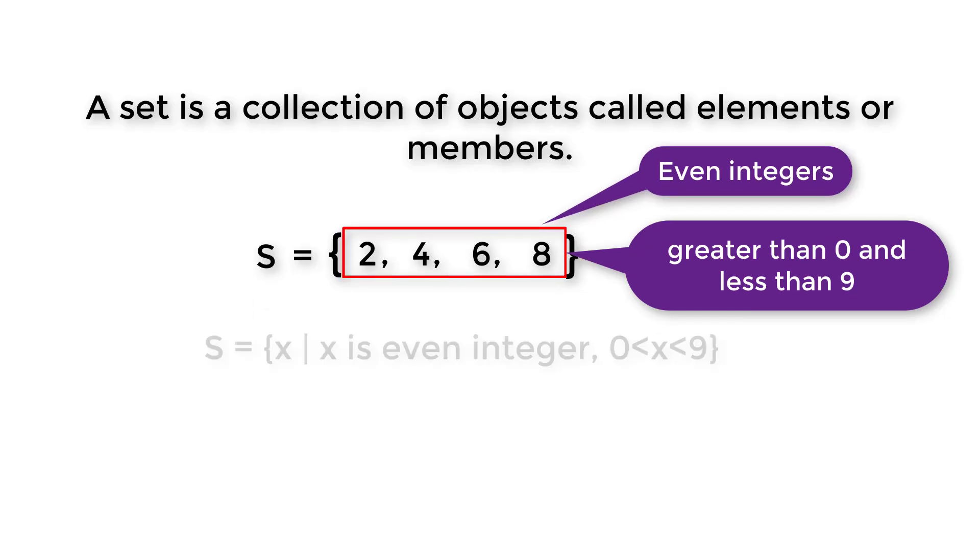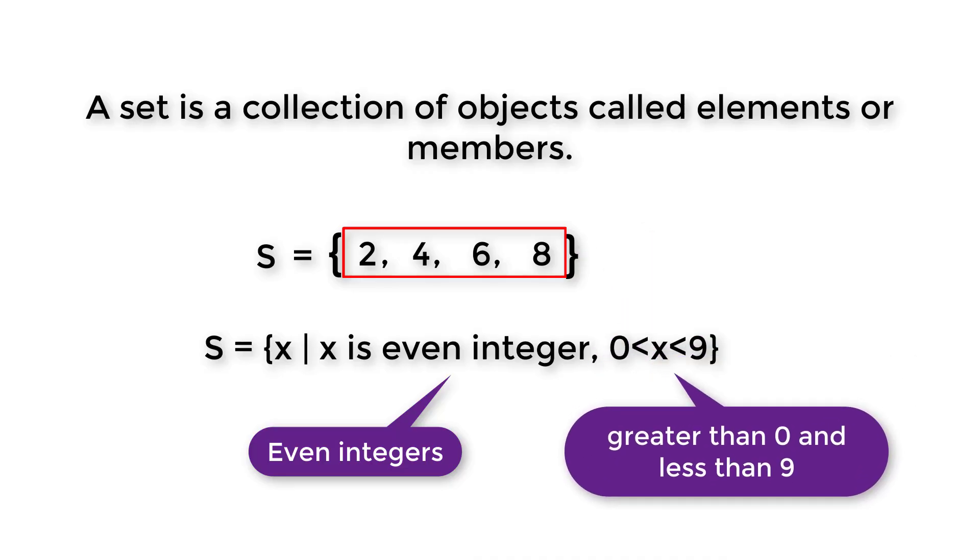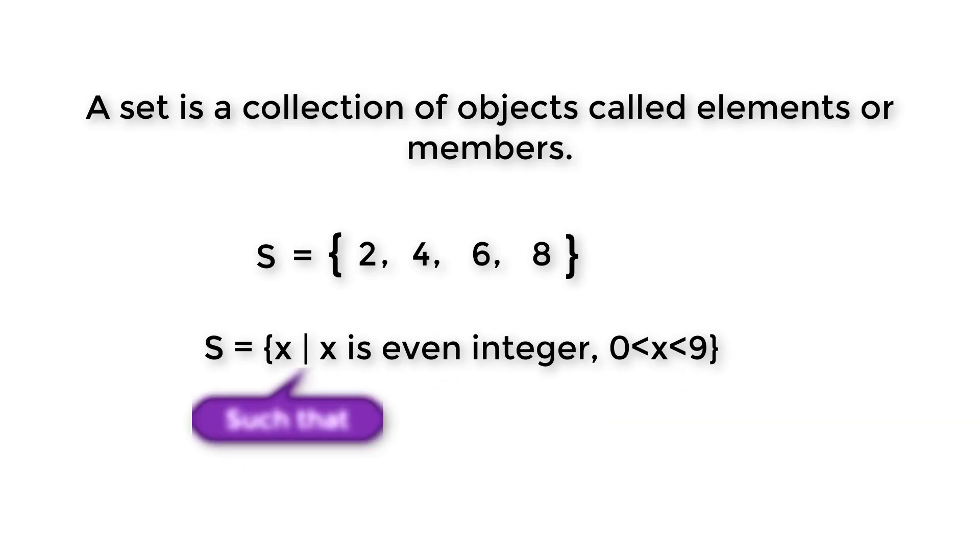Using these properties, we can express the set as S is a set of x such that x is even integer and x is greater than zero, less than nine. Here, this vertical bar is read as such that, and this comma is read as and.